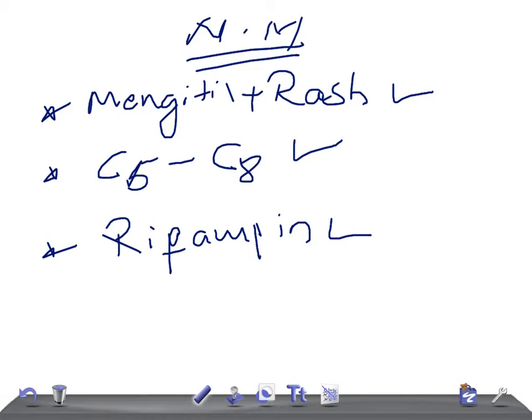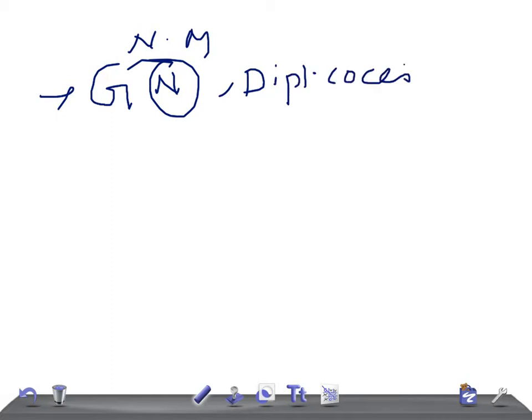Now let's go on to the detail regarding the microbiology of Neisseria meningitidis. I'll brief you on the Neisseria genus. We have two important bacteria in this class: Neisseria meningitidis and Neisseria gonorrhoeae. They are gram negative diplococci and importantly, they are oxidase positive.